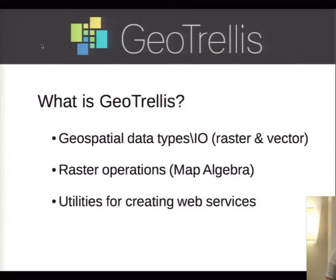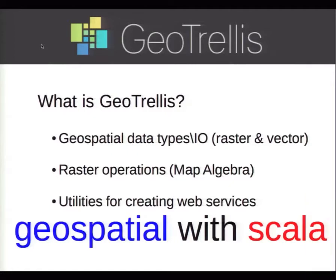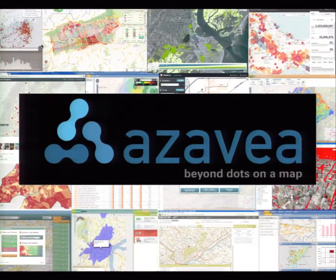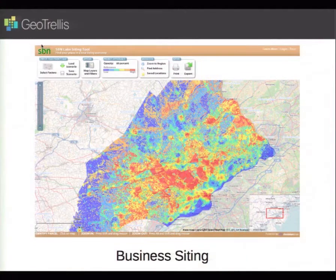GeoTrellis is a Scala library, and if you're doing geospatial work with Scala, we want to provide library functionality for doing anything geospatial. It was created by a company called Azavea in Philadelphia — a geo shop that does web maps and a lot of government and nonprofit work. Azavea is a B corporation, meaning we're for-profit but operate with a social mission. A typical use case is business siting based on a number of factors — a weighted overlay or suitability map — where you weight various geospatial factors and display them on a map.